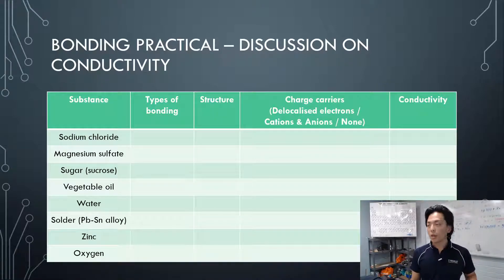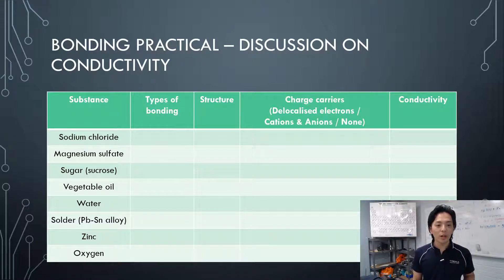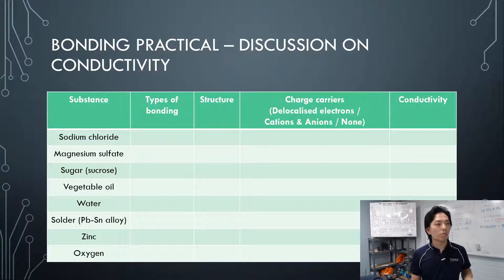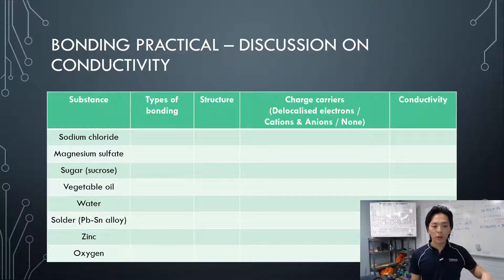Zinc should be the same — zinc has a charge carrier of delocalized electrons. Oxygen gas? No charge carriers. That should match up with what you observed, which was the conductivity of the substance in the last column.